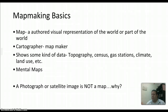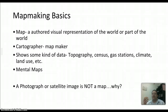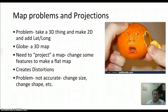The data on a map could be anything — topography, census data, what football team you're a fan of, climate, land use. Even a mental map counts, like when you draw directions for somebody to get someplace. All those things are part of what makes a map.